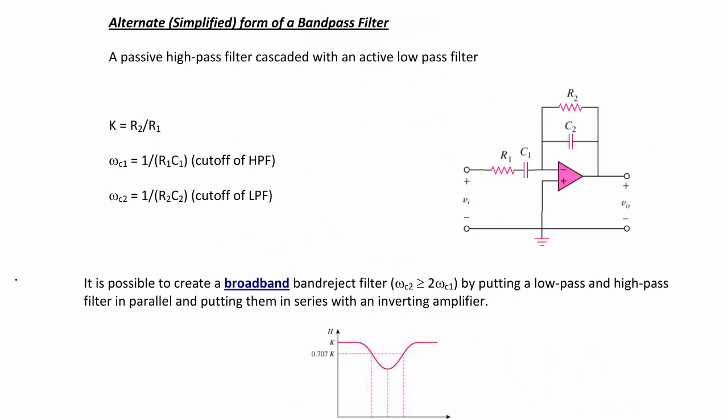An alternate simplified form of a band-pass filter is a passive high-pass filter cascaded with an active low-pass filter. For this circuit, k equals R2 over R1, ωC1 = 1/(R1·C1) is the cutoff for the high-pass filter, and ωC2 = 1/(R2·C2) is the cutoff for the low-pass filter. The disadvantage is that gains and cutoffs cannot be independently adjusted since they are all interconnected; however, the advantage is that it requires fewer operational amplifiers.